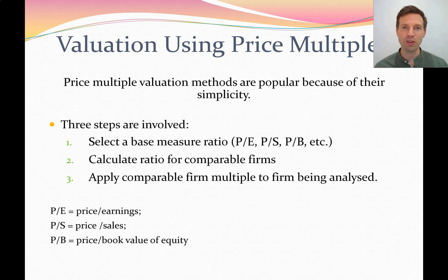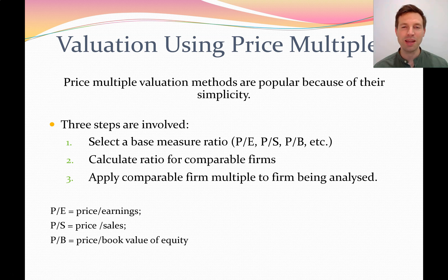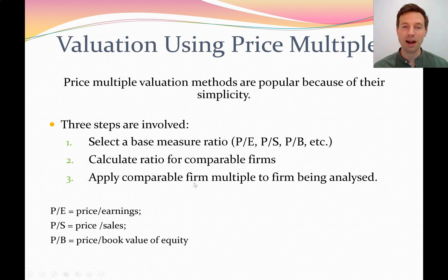There are three steps that you can follow to apply a price multiples method to value a company. The first step is to select a base measure ratio — for example, something like a price to earnings ratio, a price to sales ratio, or a price to book, also called a market to book ratio. You'll then calculate this ratio for comparable firms to the firm you wish to value, and then apply that comparable firm multiple to the firm you wish to value.